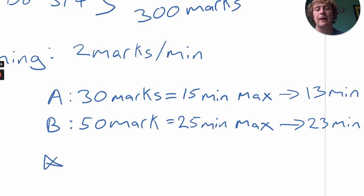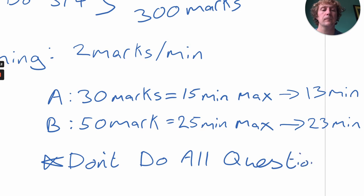I'll say one more thing, and that is don't do all of the questions. If you do all of the questions, you're going to put yourself under time pressure to get them all done. I think you'd be much better off just sticking to the 2 marks per minute rule and doing 5 out of 6 in Section A and 3 out of 4 in Section B.